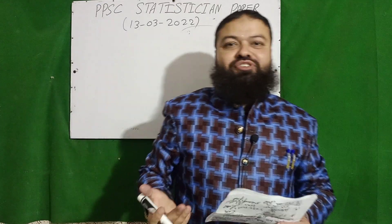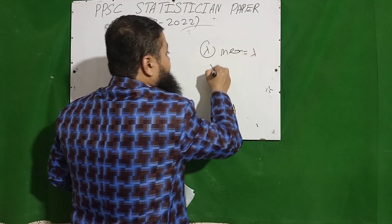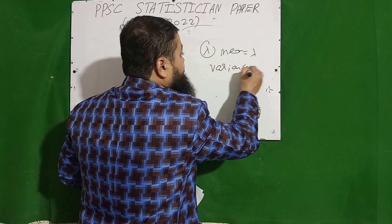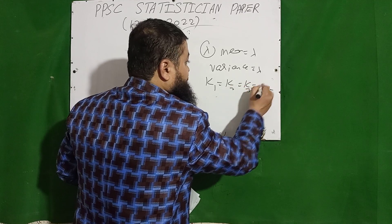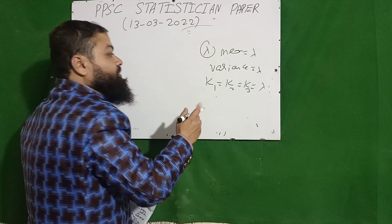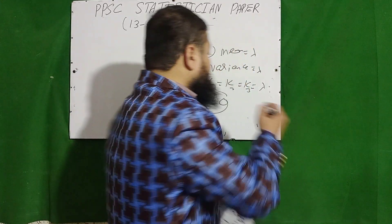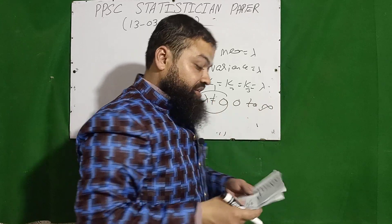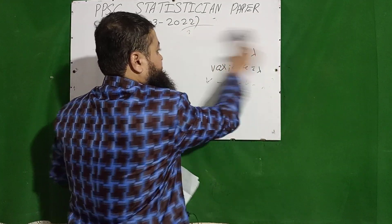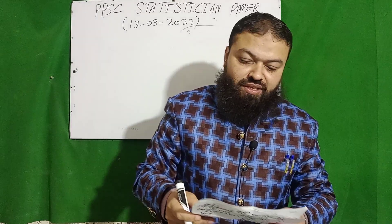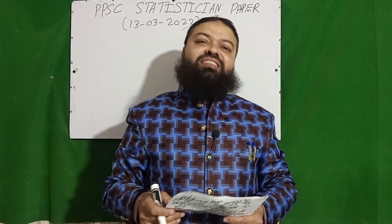In the Poisson distribution, the parameter is λ. Its mean equals λ, its variance equals λ, and all cumulants K₁ = K₂ = K₃ = λ. Its value can never be zero and its range is zero to infinity.